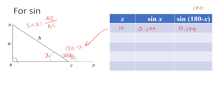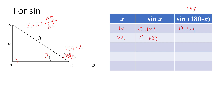Now let's increase x to 25. Sine 25 gives 0.423. And 180 minus 25 is 155, so let's check sine 155 — you also get 0.423.